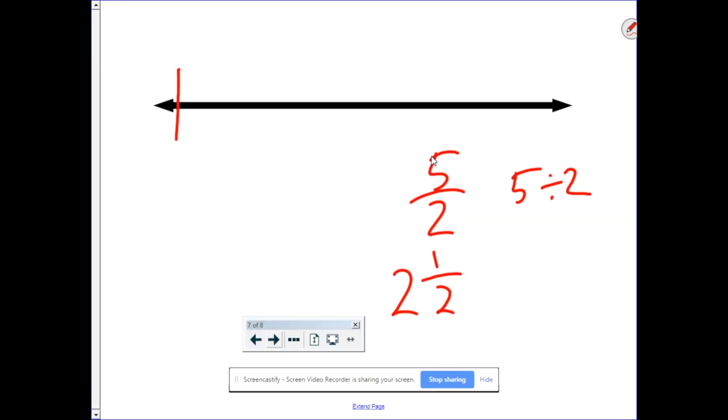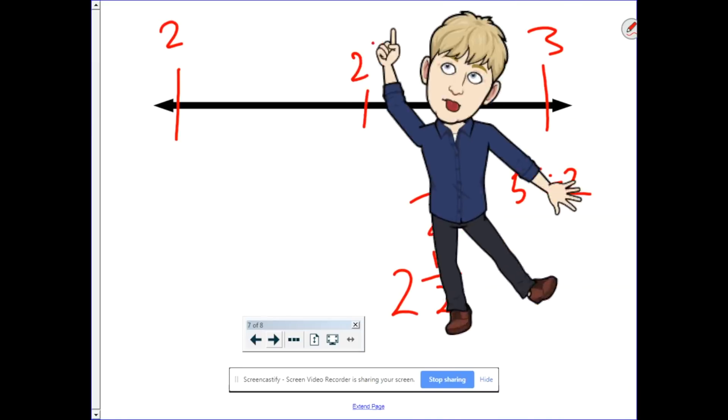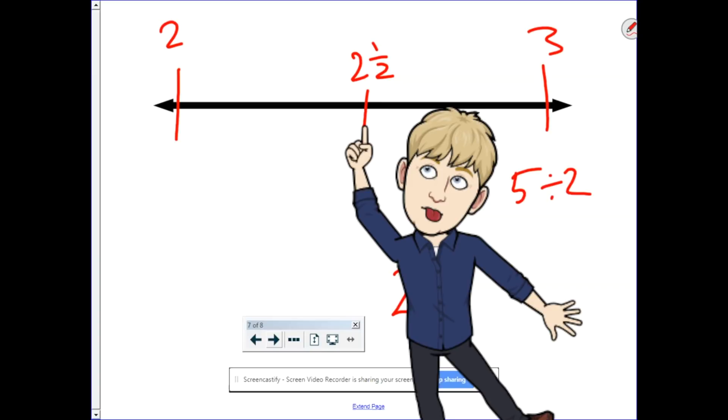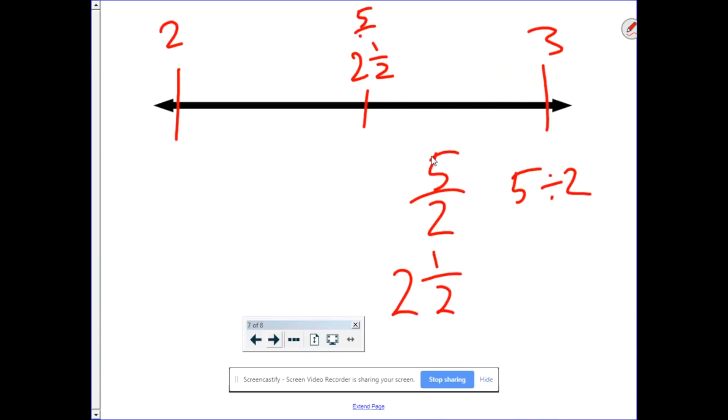Well, if I have my number line, here's two, here's three. Five-halves is two and a half. So, two and one half. So, it lies between two and three. Notice how the whole number tells you the lower of the two.